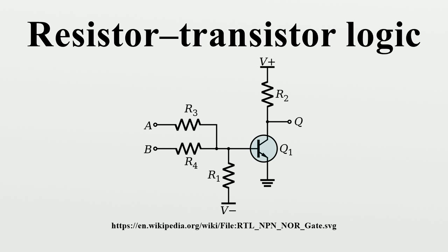The simplest RTL gate implementing logical negation is the RTL inverter, where a bipolar transistor switches. It consists of a common emitter stage with a base resistor connected between the base and the input voltage source. The role of the base resistor is to expand the negligible transistor input voltage range to the logical 1 level by converting the input voltage into current.